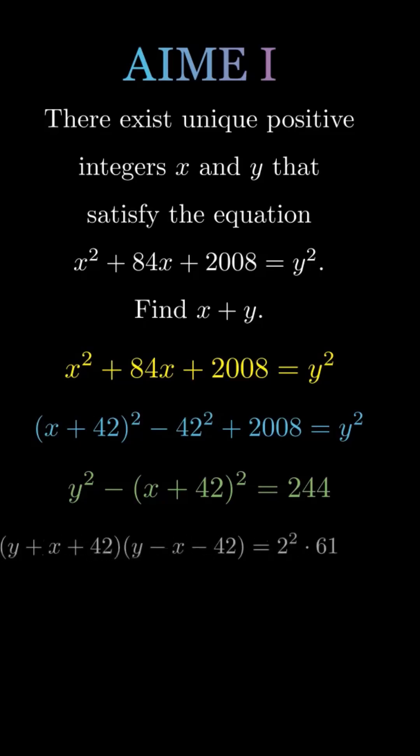So we factor: y plus x plus 42 times y minus x minus 42 equals 2 squared times 61.